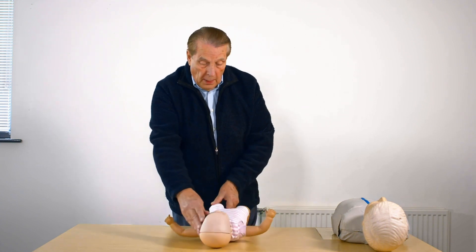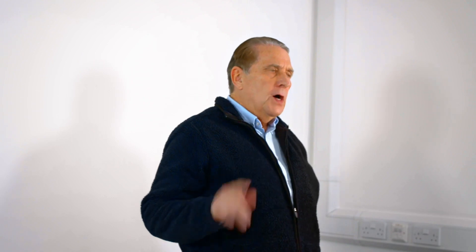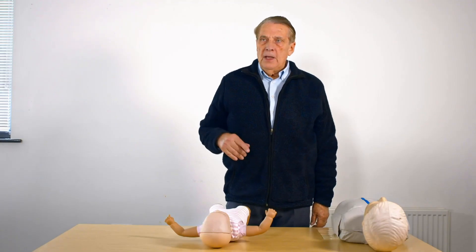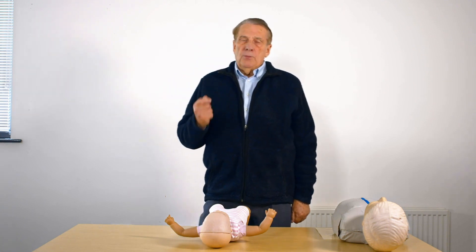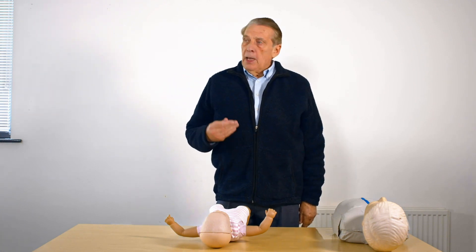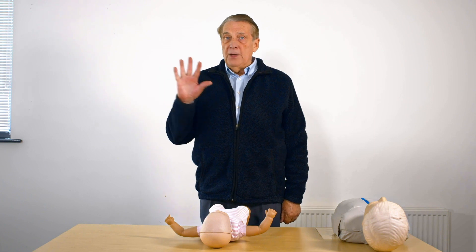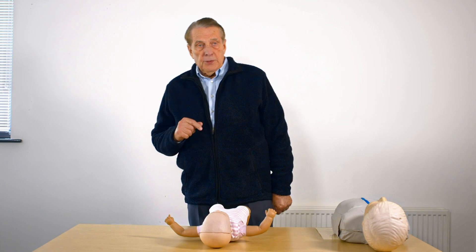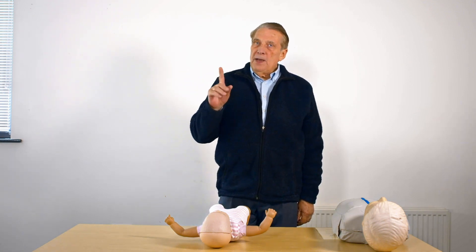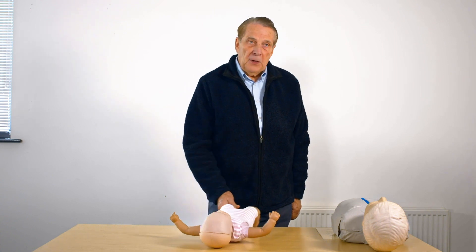To summarize: with adults it's nearly always the heart that stops and they need defibrillators. Children don't need any of that because they stop breathing first — it's respiratory. What they need is you to give them air, which is why we always start with five initial ventilations, then circulate that around the body with 15 compressions to two ventilations, for at least one minute before you even think about calling for an ambulance. Thank you very much for your time.